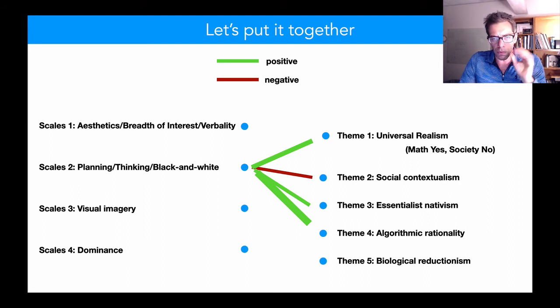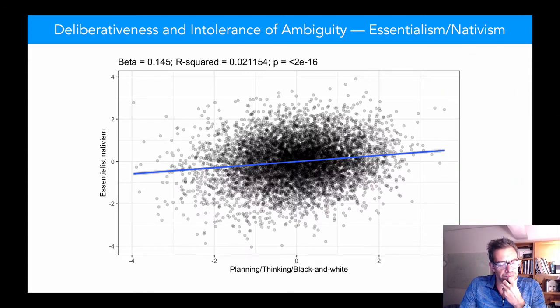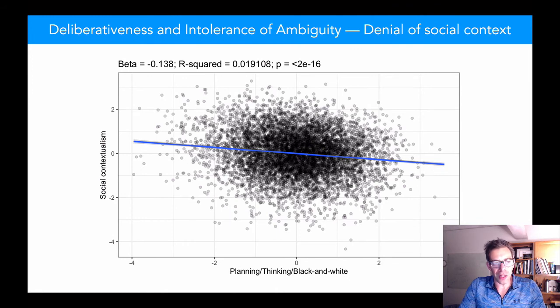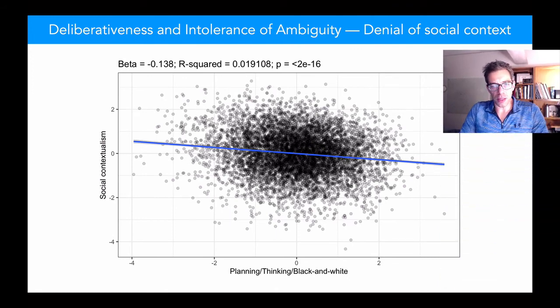Here are, just to visualize it for you, so those who are less tolerant of ambiguity, more black and white in their thinking, endorse nativism, and are less likely to endorse the importance of social context.